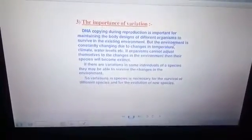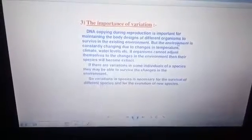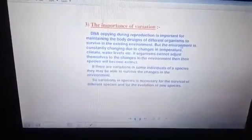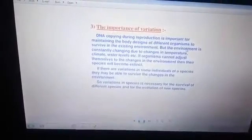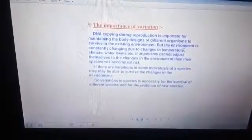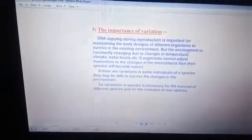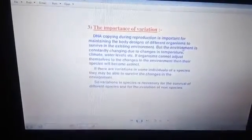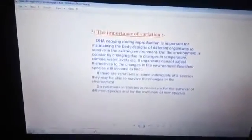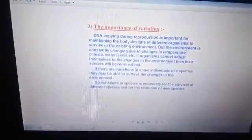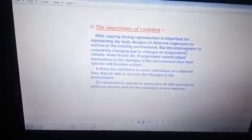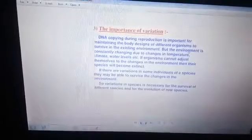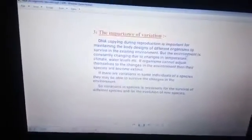Next comes the importance of variation. DNA copying during reproduction is important for maintaining the body designs of different organisms and to survive in the existing environment. But the environment is continuously changing due to changes in temperature, climate, and water level. If organisms cannot adjust themselves to that change in temperature, climate, and water level, then their species will become extinct one day.